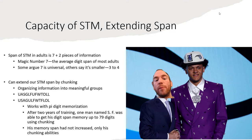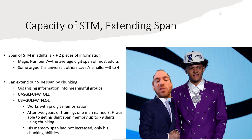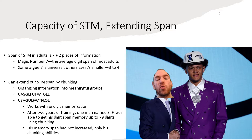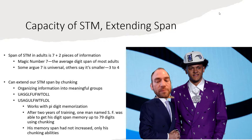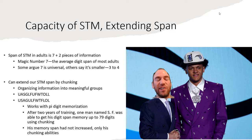However, you can extend short-term memory span by chunking — organizing information into meaningful groups. For example, take a random configuration of letters sorted into familiar acronyms like USA, GOLF, WTF, and LOL. It works with Pi digit memorization as well: after two years of training, a man named SF was able to get his digit span memory up to 79 digits using chunking. His memory span itself hadn't increased, but his chunking ability had.